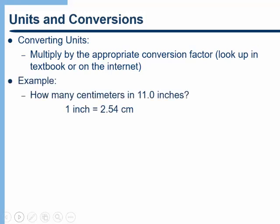Once you have the conversion factor then you simply want to write out the conversion in a way that you can easily figure out what units cancel and what units you're left with. For example how many centimeters in 11 inches? Well the first thing we need is the conversion factor 1 inch equals 2.54 centimeters.